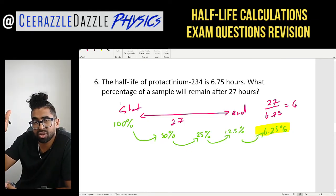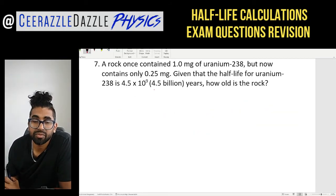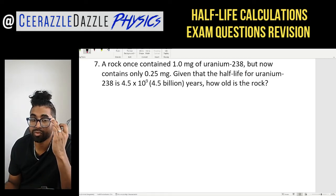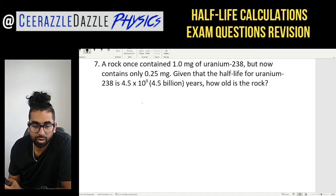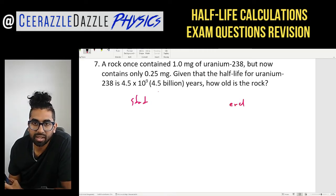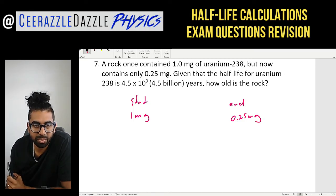Question seven: a rock once contained 1 milligram of uranium-238 but now contains only 0.25 milligrams. Given that the half-life of uranium-238 is 4.5 × 10⁹ years (4.5 billion years), how old is the rock? At the start we have 1 milligram; now it contains 0.25 milligrams, and the half-life is 4.5 × 10⁹ years.